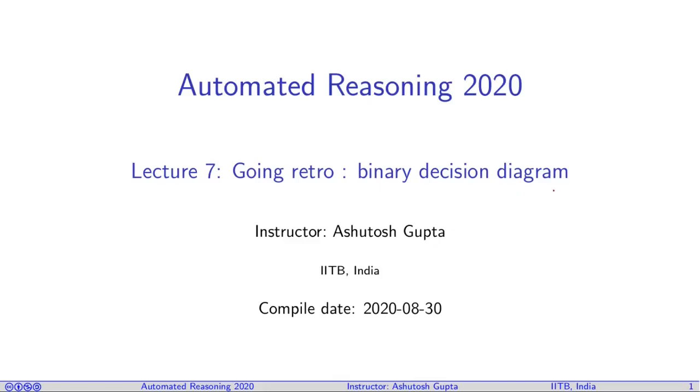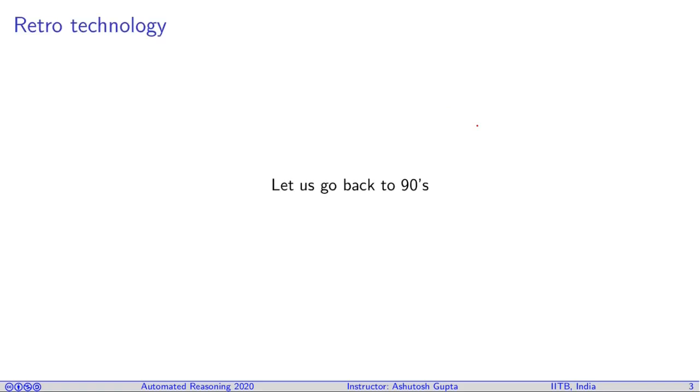Now we're going to look at the binary decision diagram, invented in the 90s, which had a great impact. Later on, modern day SAT solvers came into existence, and this technology has less impact now. Let's go back to the 90s and see why the BDD data structure was an effective data structure for SAT solving.